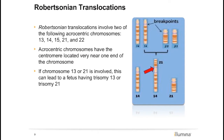Translocations are structural rearrangements that occur between chromosomes. Robertsonian translocations involve the acrocentric chromosomes listed on this slide. If a Robertsonian translocation involving chromosomes 21 or 13 occurs, there is a risk for conception with trisomy 21 or trisomy 13.